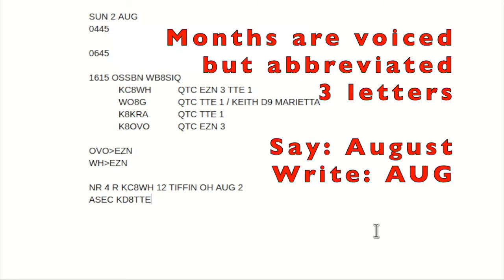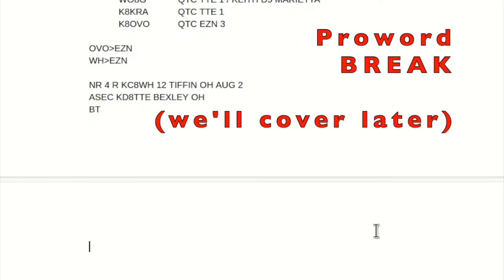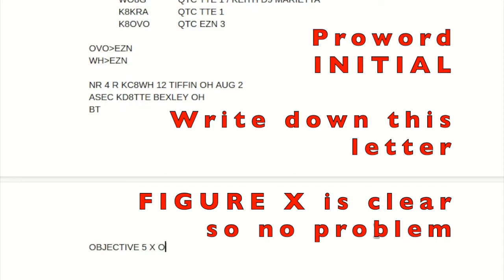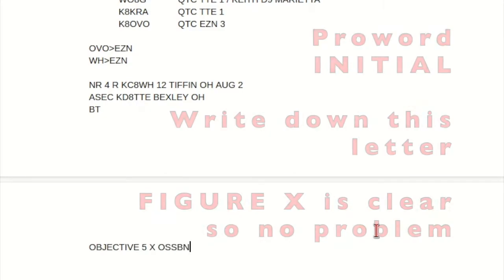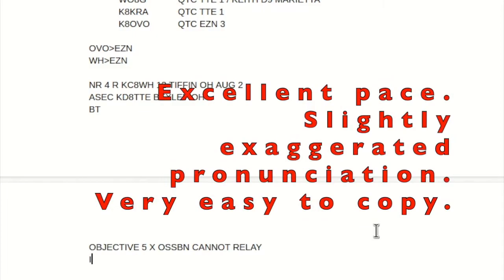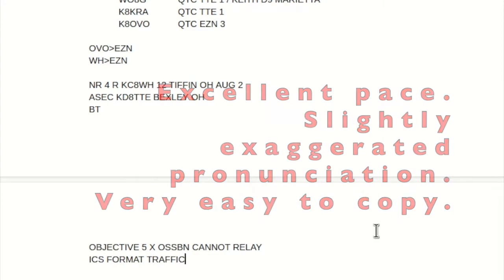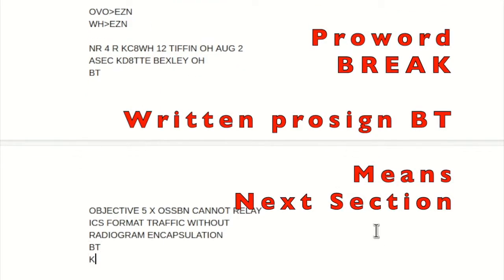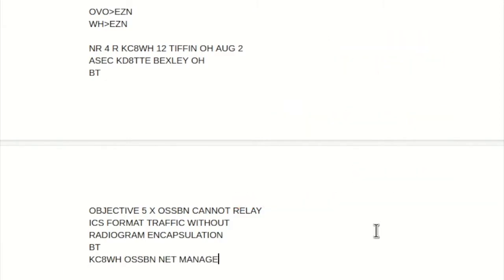KD8TTE. Sextly, Ohio. Break. Objective, number five, figure X-ray, letter group Oscar Sierra Sierra Sierra Bravo November. Cannot relay, letter group India Charlie Sierra. Format traffic without radiogram and calculation, right, A-Z-A-W-H, O-S-S-B-N, net manager, net, no more.